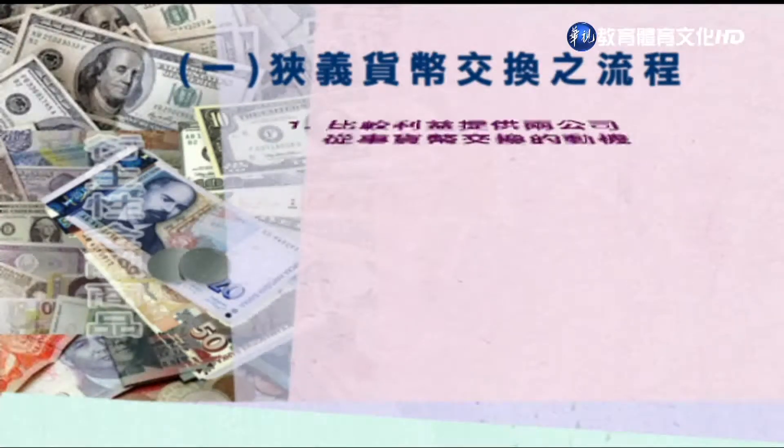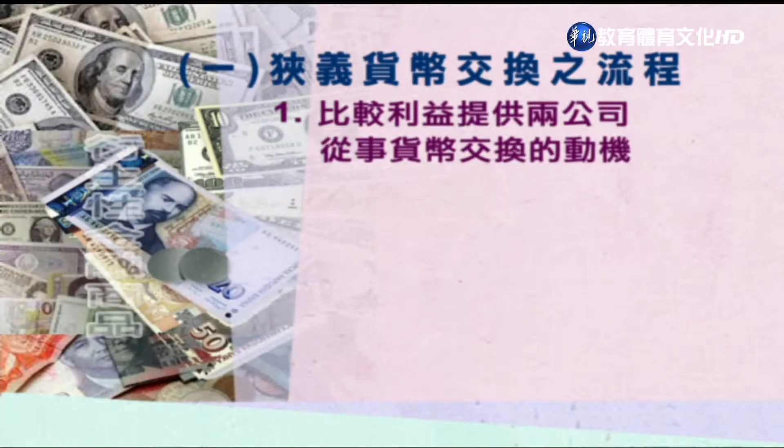接着来看第二个重点——货币交换的流程。首先看狭义货币交换的流程。比较利益提供了两个公司从事货币交换的动机。货币交换是同为固定利率、但不同货币间的资金流量互相交换。货币交换发生的原因跟利率交换类似，也可以从比较利益来解释，我们用以下例子来加以说明。